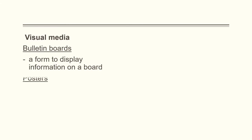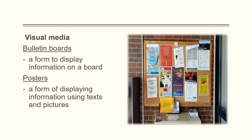We have visual media: bulletin boards, a form to display information on a board, and posters, a form to display information using text and features. Bulletin boards and posters complement each other and are usually found where people gather, such as for memos, shots and sounds, scheduled meetings, and announcements.